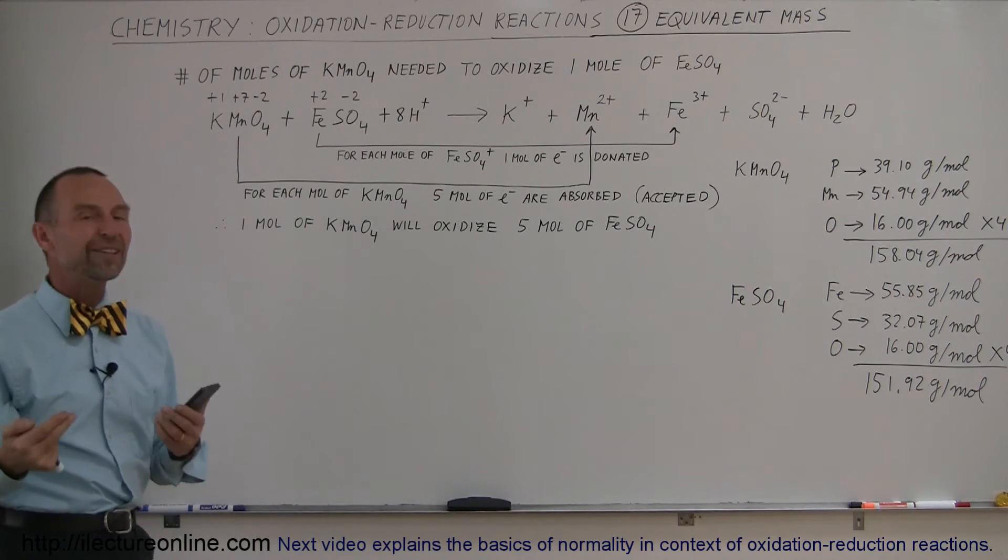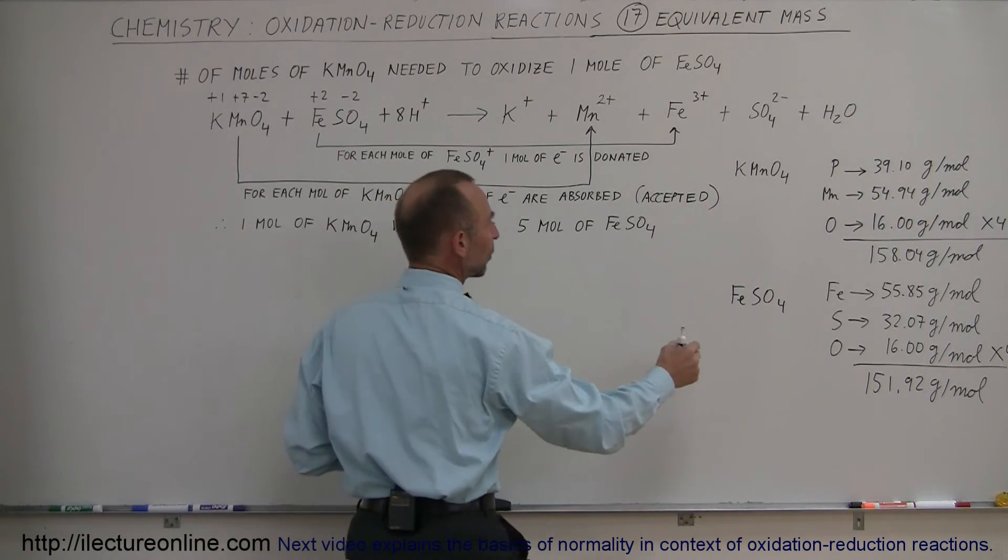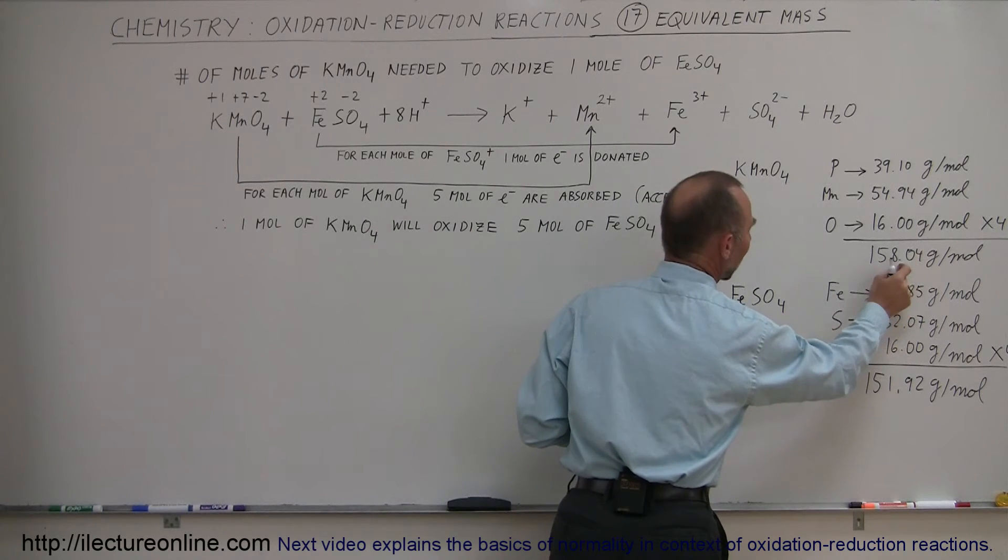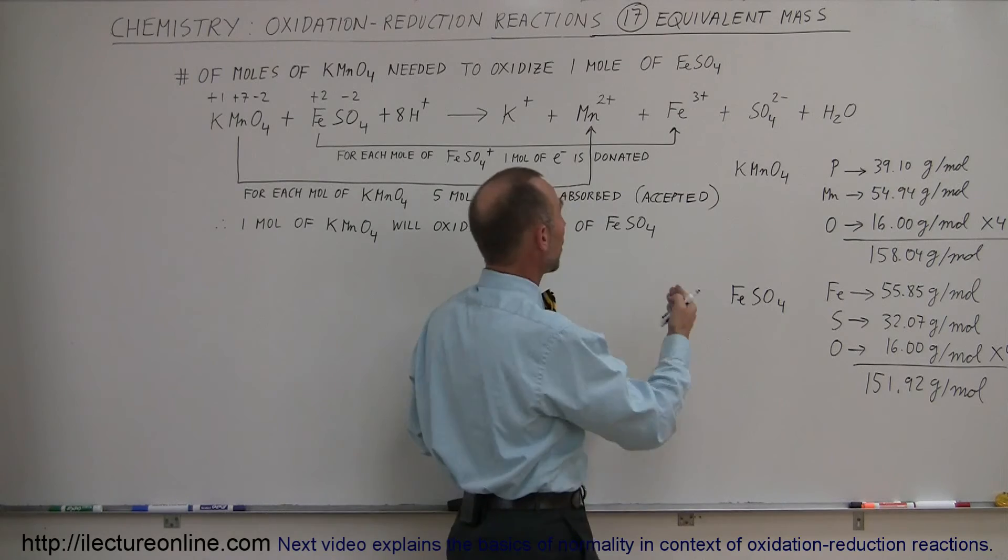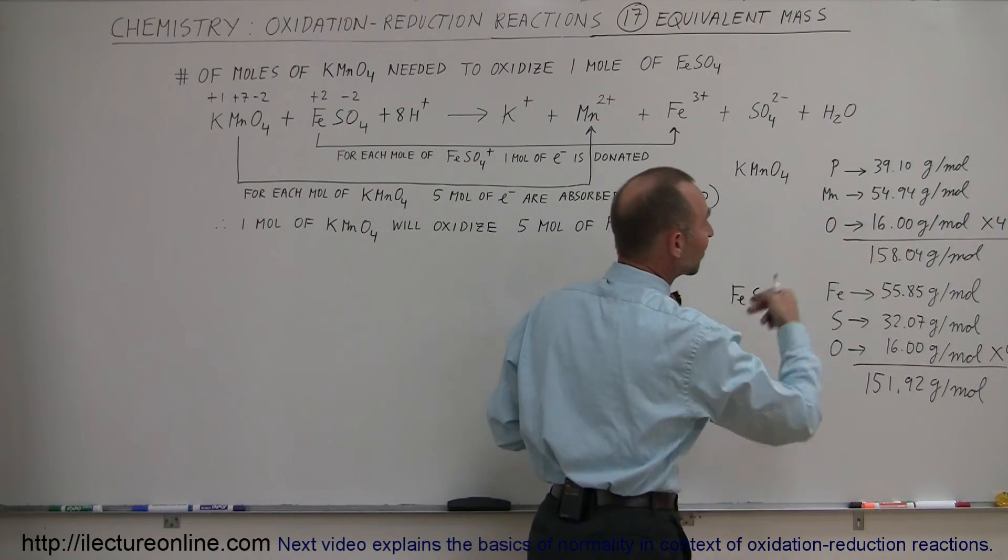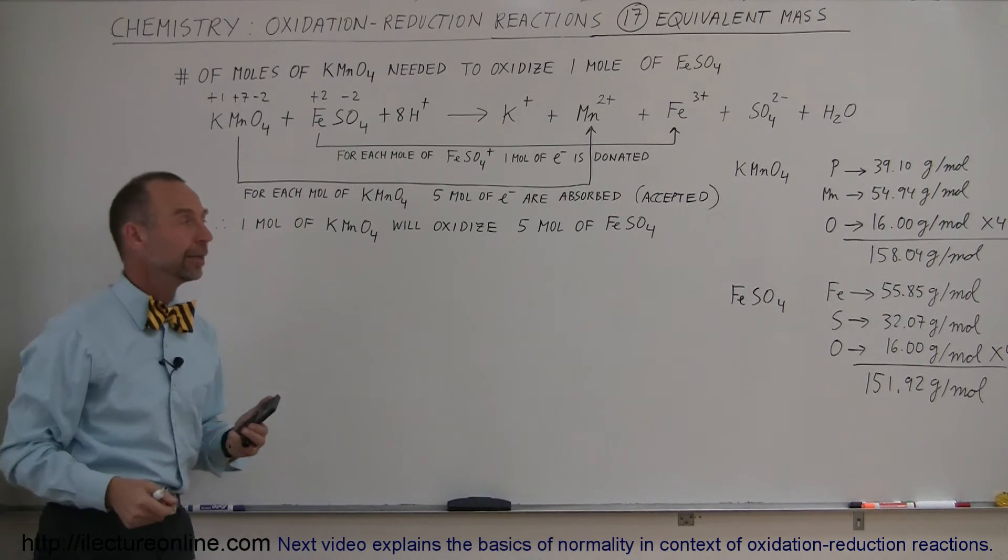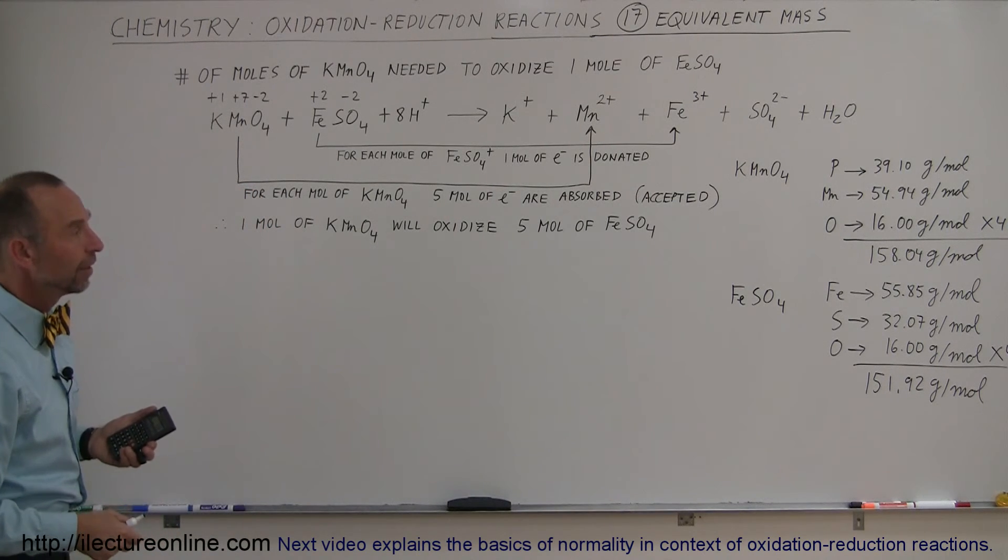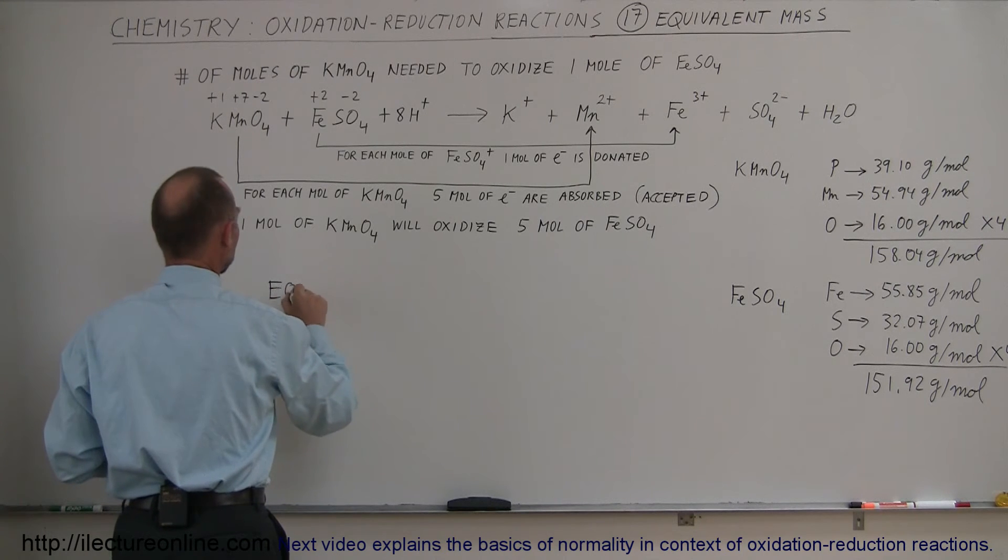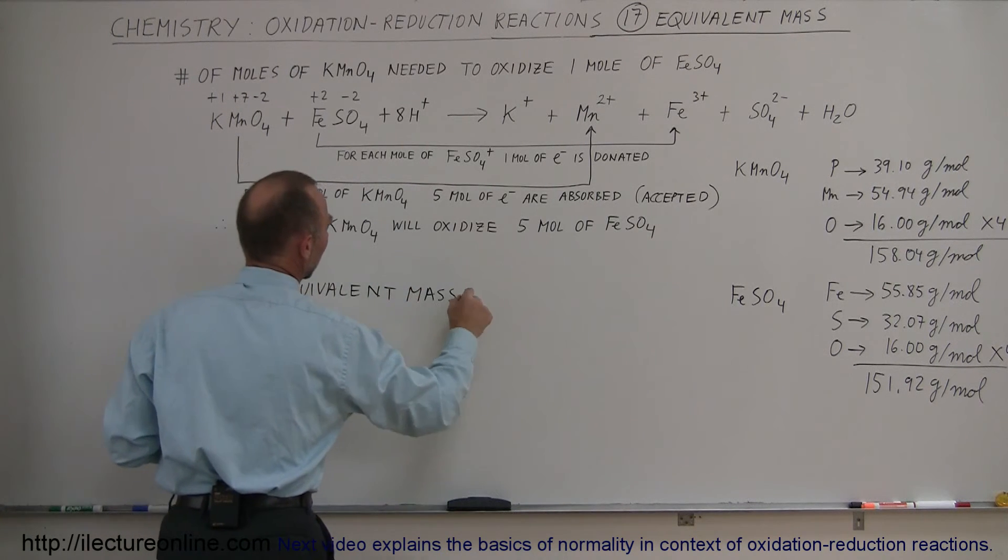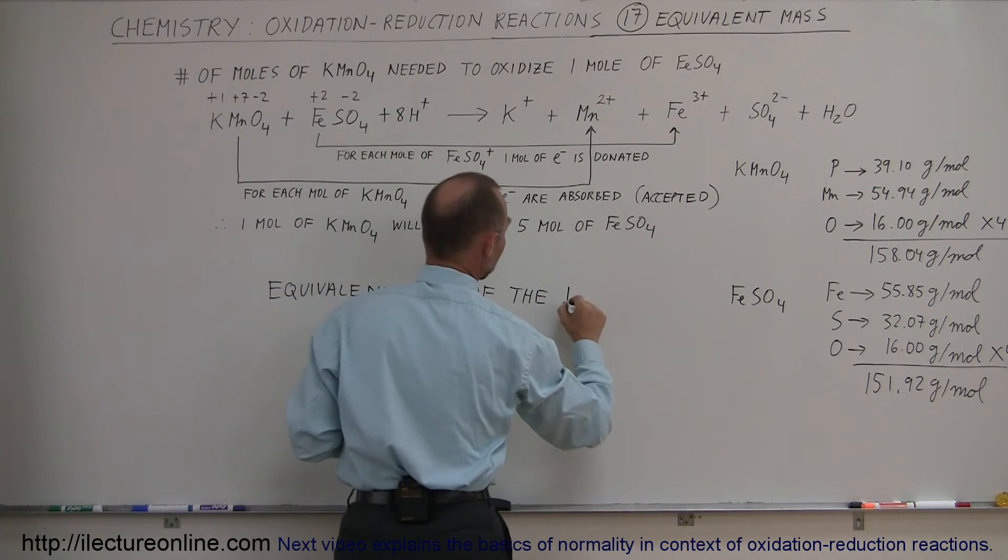That means you only need one-fifth the mass. So the equivalent mass would be that we take this number here and divide by five, because you only need one-fifth as much. For each mole, you are absorbing or accepting five times as many electrons as being donated by the iron in the iron sulfate.